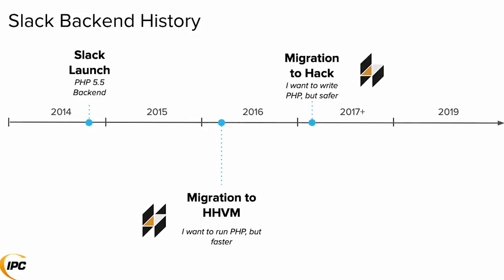HHVM is an alternative runtime for PHP that was developed at Facebook — it's a completely rewritten PHP runtime from the ground up, but still about running PHP. It wasn't for another year that we actually migrated to Hack. Hack is a different language that also runs on HHVM. It's PHP but with more data types and a static type checker, which means it can check your code and look for errors without actually running it, analyzing all possible code paths. This is not about performance — it's about writing PHP safer, having fewer bugs, and having more confidence. You could say we came to HHVM for performance, but we stayed because of Hack and type safety.